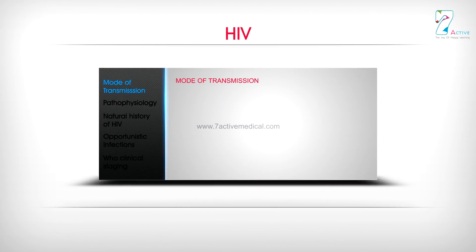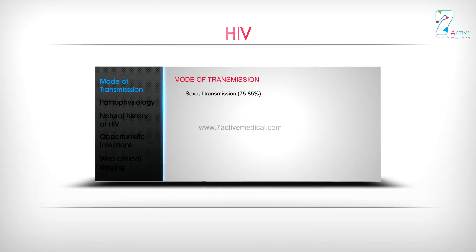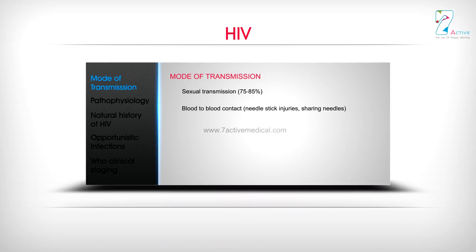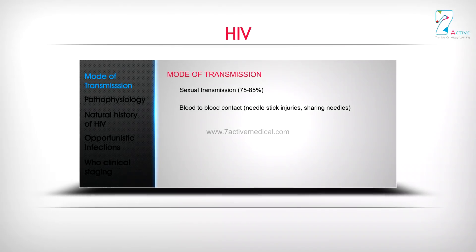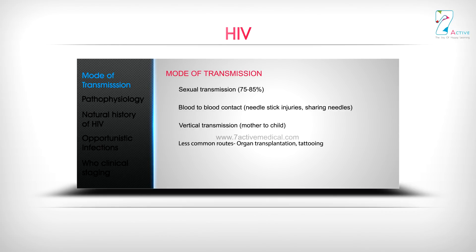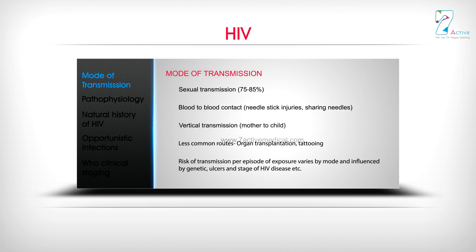Mode of transmission: Sexual transmission accounts for 75 to 85%. Other routes include blood-to-blood contact, needlestick injuries, sharing needles, and vertical transmission (mother-to-child). Less common routes include organ transplantation and tattooing. Risk of transmission per episode of exposure varies by mode and is influenced by genetic factors, ulcers, and stage of HIV disease.